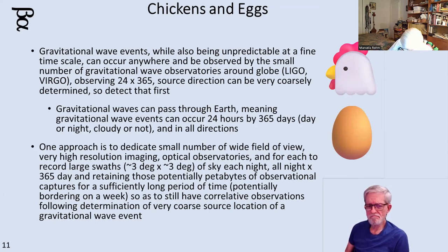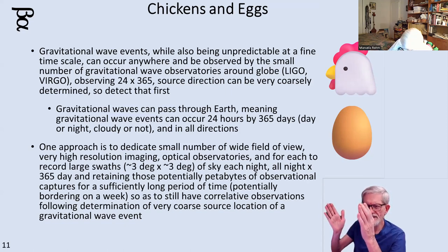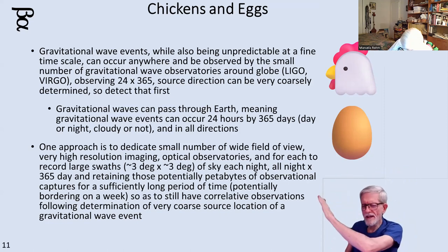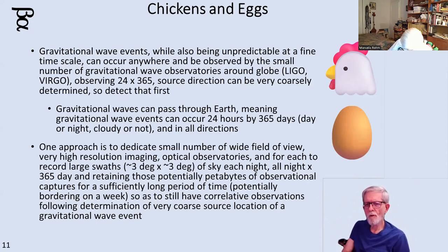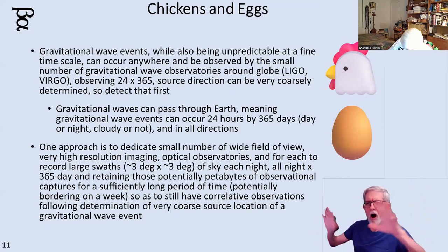Gravity wave events are 24-by-365 and can come up through the Earth — they occur daytime, nighttime, through clouds, rain, or snow. Optical events require a dark, clear sky. So you take pictures in a mosaic pattern all night long, giving different telescopes different parts of the sky, and hopefully you're covering all the interesting parts of the sky where gravity wave events might have occurred.